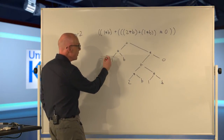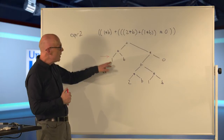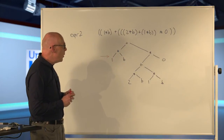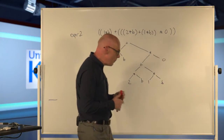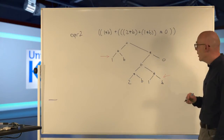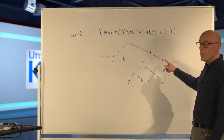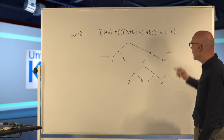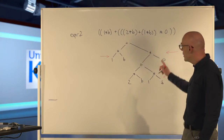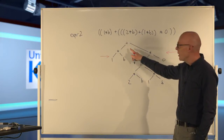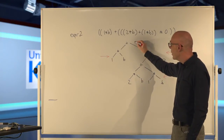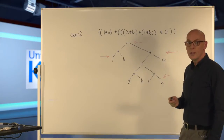First of all, we can simplify something like this: we have a multiplication by one — one times b simplifies to b. We also have another multiplication by one down here. We've got a multiplication by zero, and that simplifies to zero. And then finally, hidden at the top, we have an addition of zero. Because if this whole part of the tree simplifies to zero, we can then simplify the whole thing.